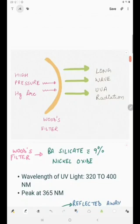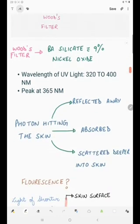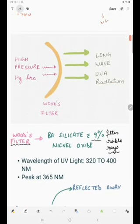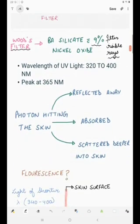We have a high pressure mercury arc. A high pressure mercury arc will emit some radiation that will pass through a Wood's filter and some long wave UV radiation will be emitted further. Wood's filter is made up of barium silicate with 9% nickel oxide. It will filter all the visible rays. The UVA radiation that is emitted by the Wood's filter will be invisible, not visible to the naked eye. The wavelength of UV light is 320 to 400 nanometers and it will peak at 365 nanometers.